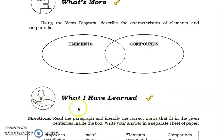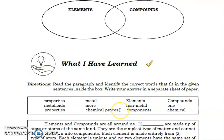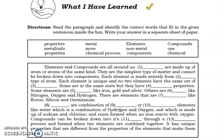Let's proceed to the sixth activity, which is the what I have learned. Here you're going to complete the paragraph with the words written on the boxes. You're going to number from 1 to 12 for the what I have learned part.